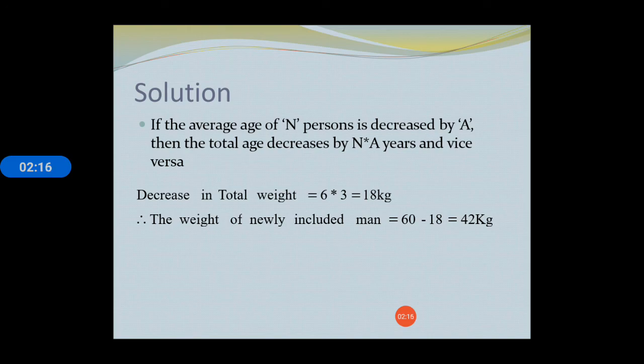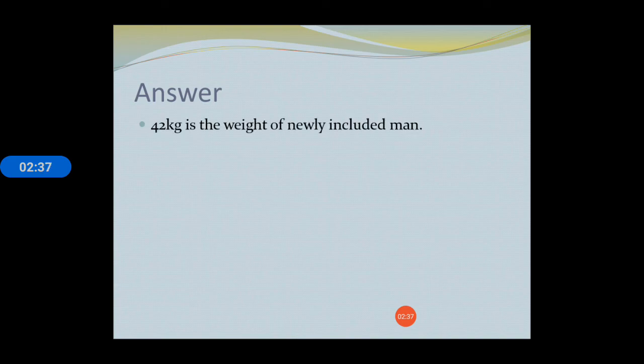Therefore, the weight of newly included man is 60 minus 18 which is equal to 42 kgs. So we arrive at the final answer. 42 kgs is the weight of newly included man.